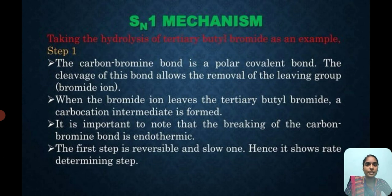The first step is the carbocation generation step. Taking the hydrolysis of tertiary butyl bromide as an example. The carbon-bromine bond is a polar covalent bond. The cleavage of this bond allows the removal of the leaving group, i.e., the bromide ion.